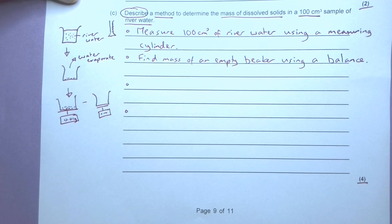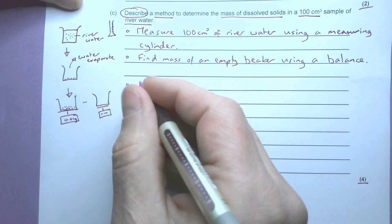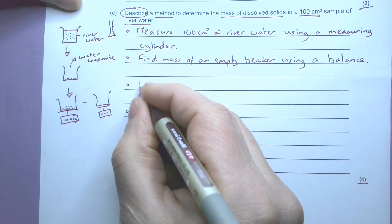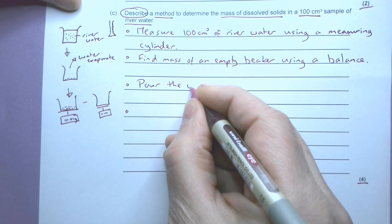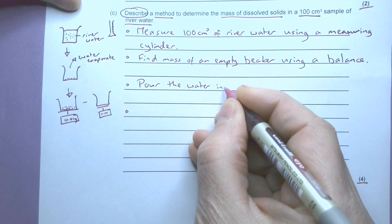Okay, so find the mass of an empty beaker using a balance. So every time I'm saying what I'm doing and what I'm using, I start each sentence with an action verb, so I'm saying this is what I'm doing - measure this, find that. What am I going to do then? Then I'm going to pour the water into the beaker.